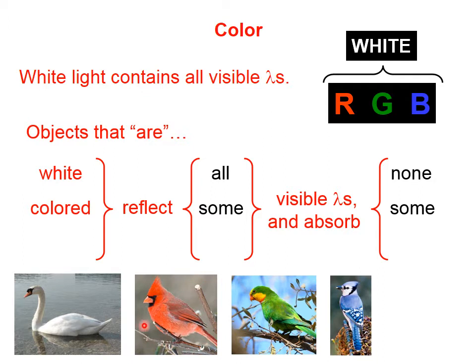This cardinal here reflects red, which is why we see it as red, and we're going to say absorbs green and absorbs blue. This bird is green because green wavelengths reflect back, reds and blues are absorbed.